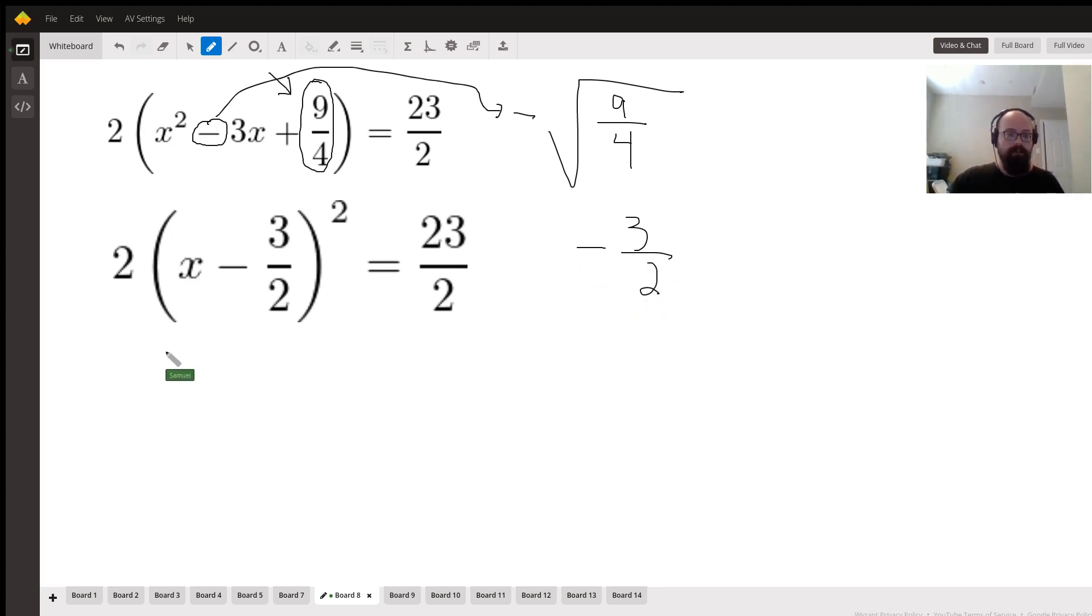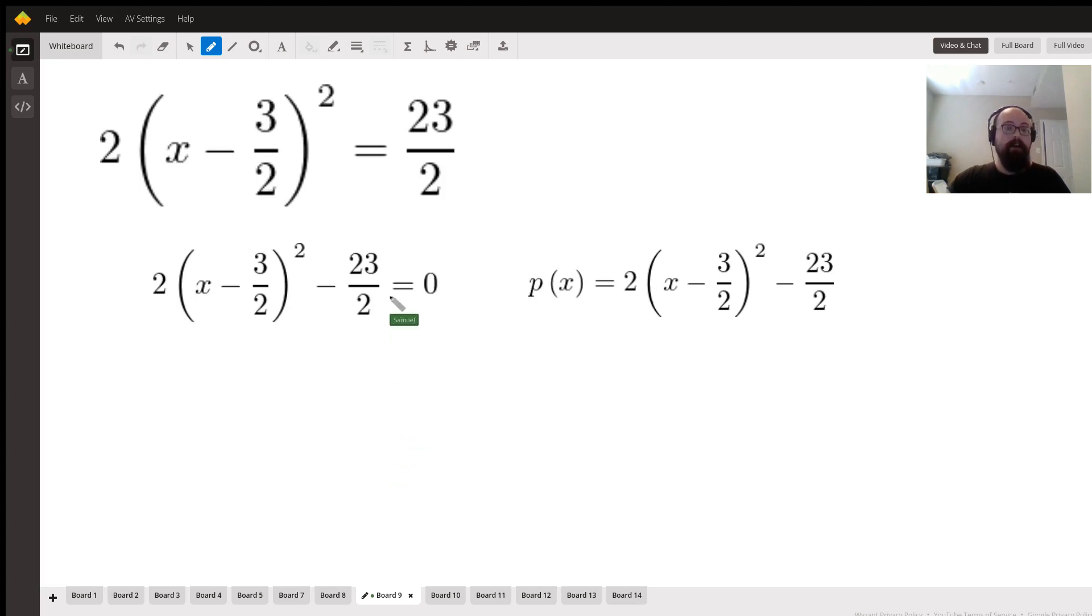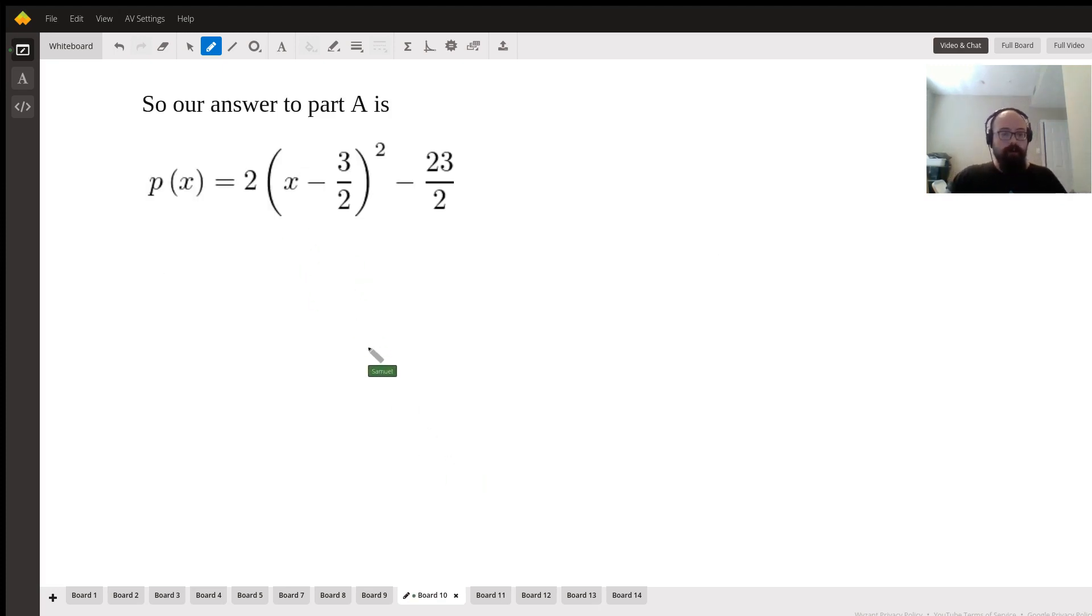So what this is going to turn into is 2(x - 3/2)² = 23/2. Once we have that, we simply subtract our 23/2 from both sides, giving us 2(x - 3/2)² - 23/2 = 0, and then we just replace that 0 with a p(x), meaning that p(x) = 2(x - 3/2)² - 23/2. So that's our answer to part A.